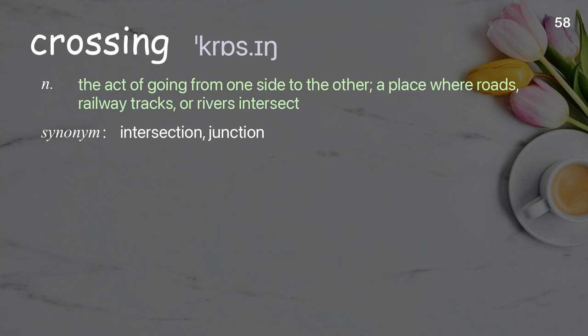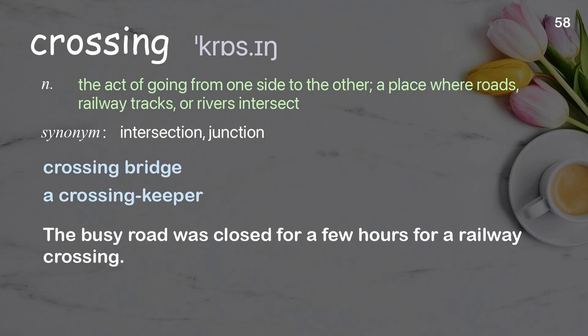Crossing: the act of going from one side to the other; a place where roads, railway tracks, or rivers intersect. Examples: crossing bridge; a crossing keeper. The busy road was closed for a few hours for a railway crossing.